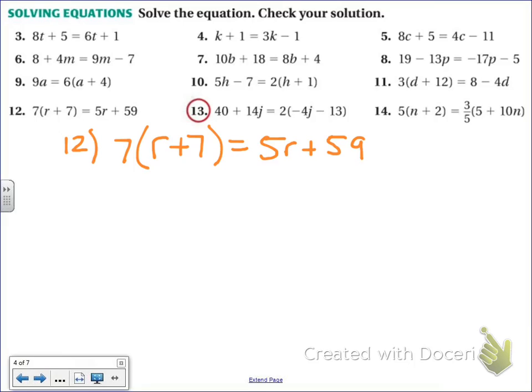So I see parentheses. First thing I'm going to do is I'm thinking distributive property. So I see that 7. Let's go ahead and distribute that 7. And so 7 times r is 7r, 7 times 7 is 49. And I'm going to copy the rest of it down, 5r plus 59.